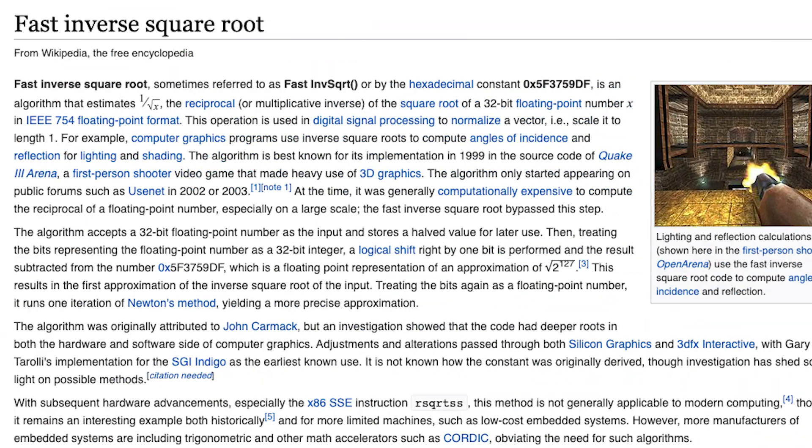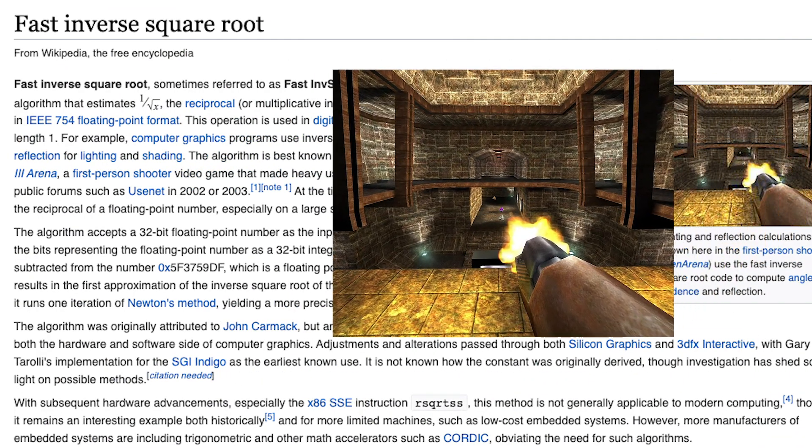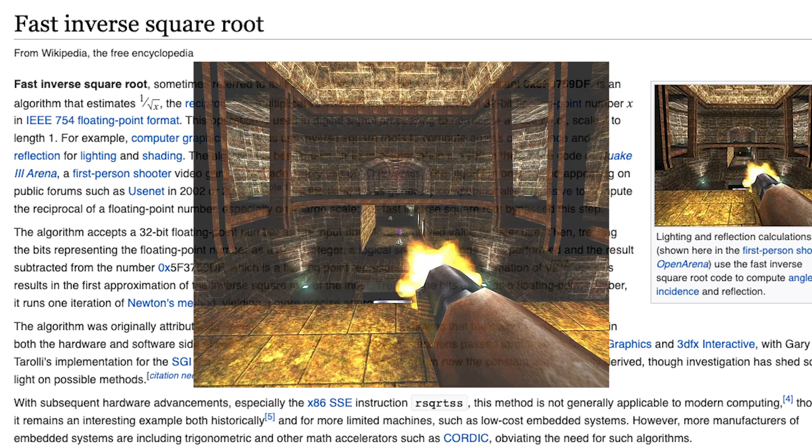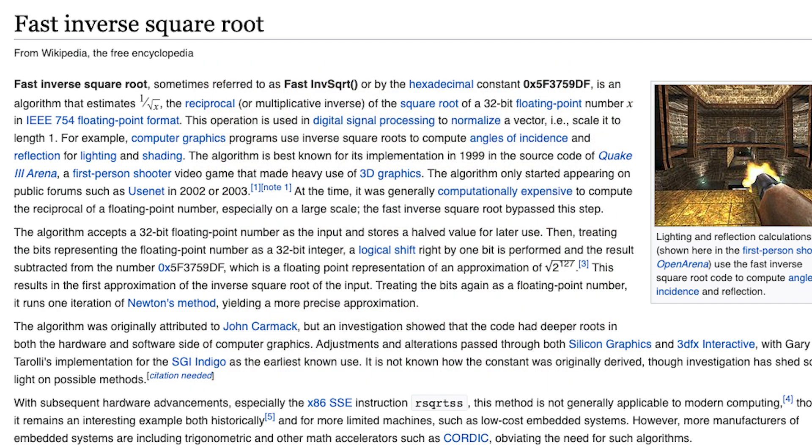In fact, here's an algorithm that has actually been used for that exact reason, for creating 3D scenes in video games. It calculates 1 over root x, in this case, for the purpose of normalizing vectors. It's not exactly the same algorithm, but it does at least include Newton's method.